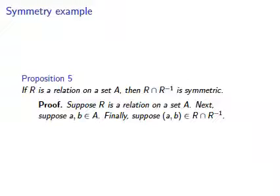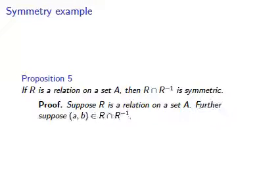If at this point you said something like, suppose a is related to b in r, you would be getting off on the wrong foot. That is a very common mistake for beginners to make in my experience. Now that we have that right, we can shorten it up a bit. Now we want to show that b is related to a in the relation r intersect r inverse.